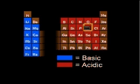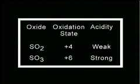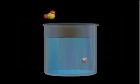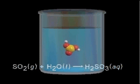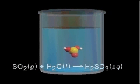For example, sulfur forms two common oxides: sulfur dioxide, in which sulfur is in the plus four oxidation state, and sulfur trioxide, in which it is in the plus six oxidation state. Sulfur dioxide reacts with water to form sulfurous acid, H2SO3, a weak acid.